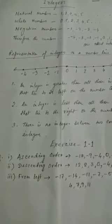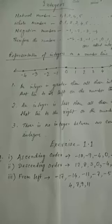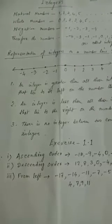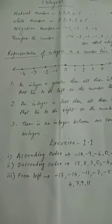Then whole numbers start with 0, and then it continues like 1, 2, 3, 4, 5 up to infinity.